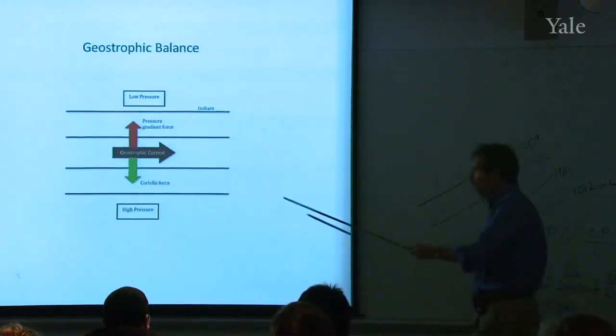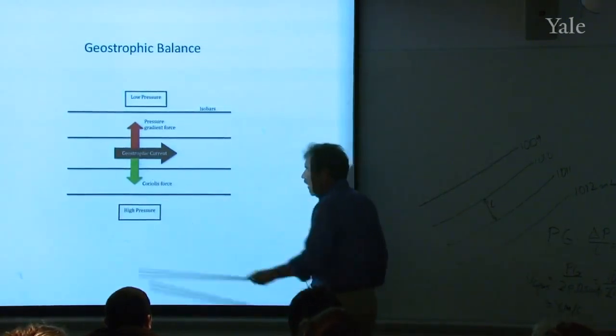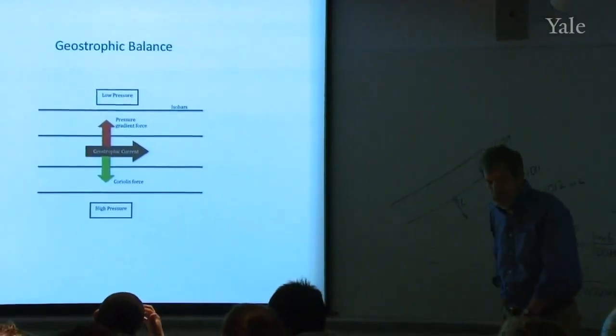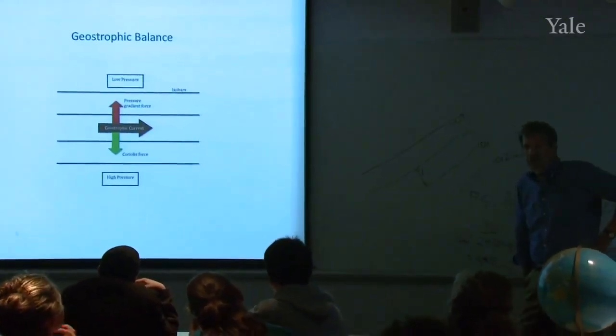So this is the only consistent. Once I draw in that pressure gradient force, then that vector and that vector are locked in. That's the only way I can draw them if that air parcel is to be in geostrophic balance.